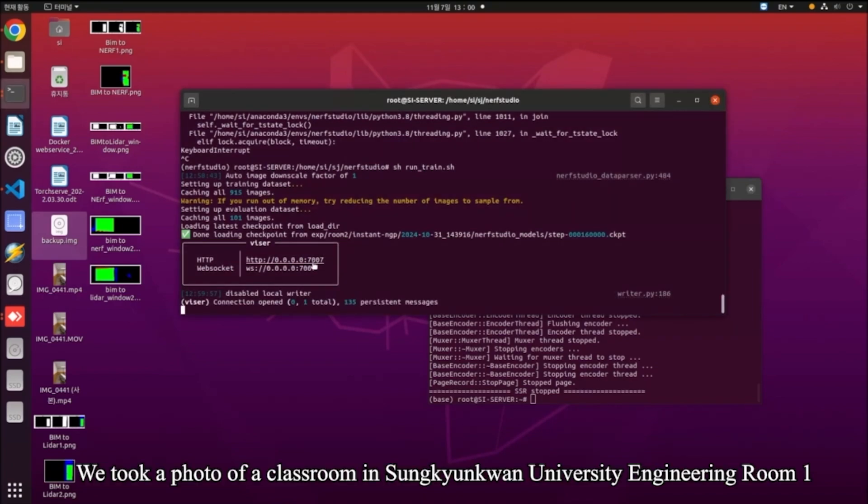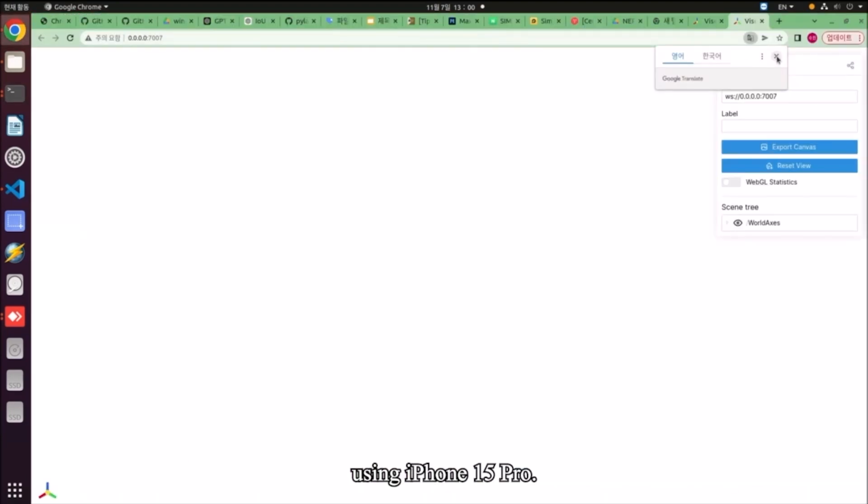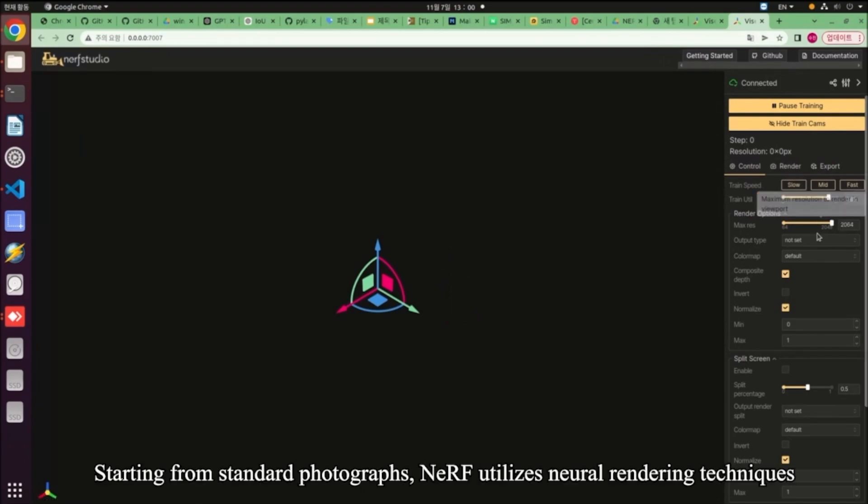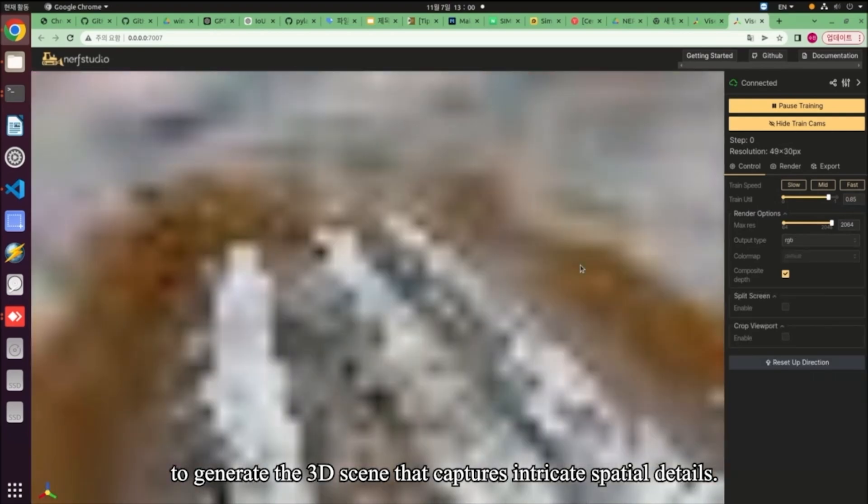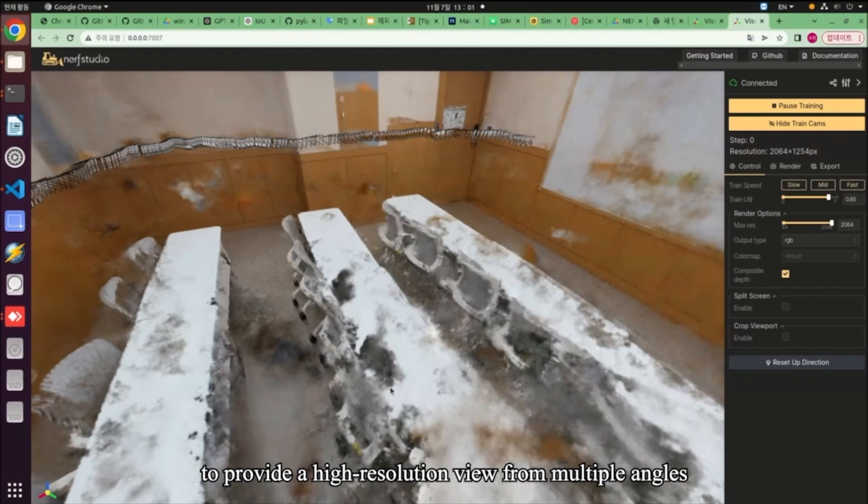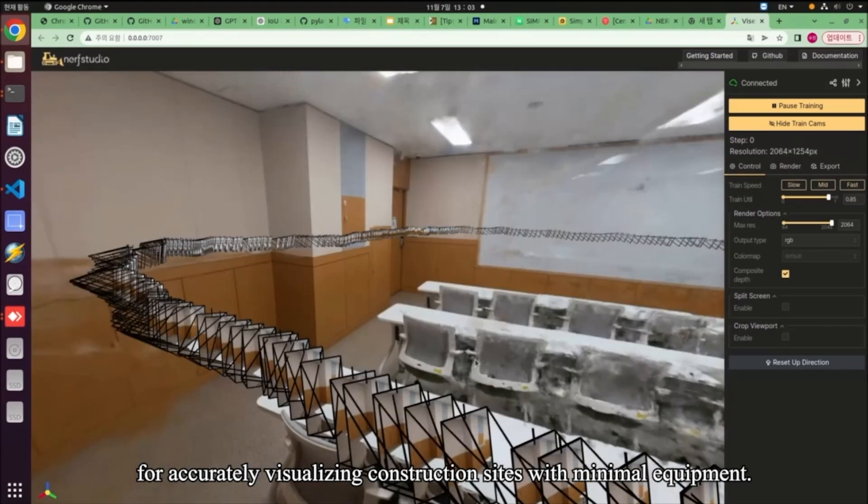We took a photo of a classroom in Sungkyunkwan University Engineering Room 1 using iPhone 15 Pro. Starting from standard photographs, Nerf utilizes neural rendering techniques to generate the 3D scene that captures intricate spatial details. This transformation not only showcases Nerf's capability to provide a high-resolution view from multiple angles, but also underscores its potential as a practical tool for accurately visualizing construction sites with minimal equipment.